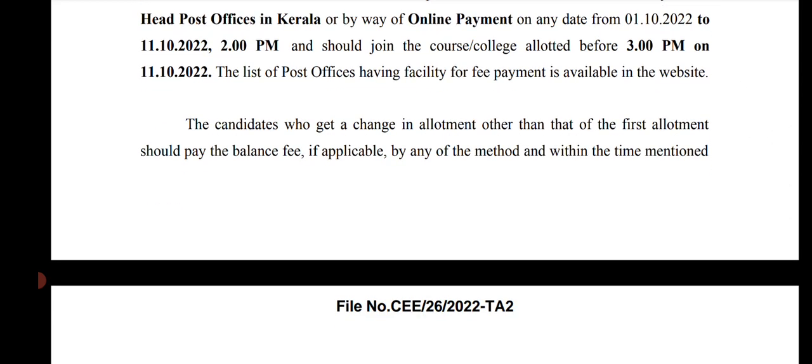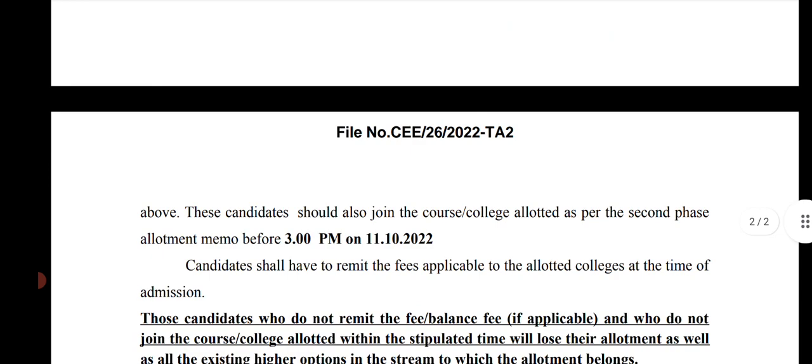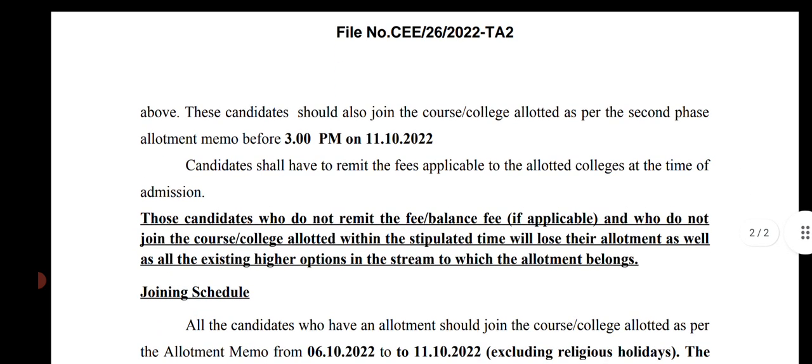The candidates who get a change in allotment other than that of the first allotment should pay the balance fee, if applicable, by any of the methods and within the time mentioned. These candidates should also join the college. Candidates who do not remit the fee or balance fee, and who do not join the course or college allotted within the stipulated time, will lose their allotment as well as all existing higher options in the stream to which the allotment belongs.